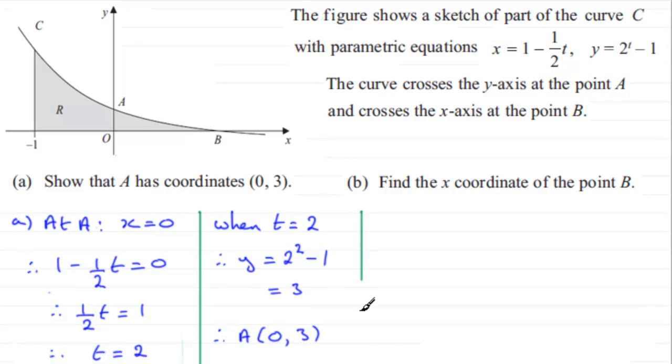Now for part B we've got to find the x-coordinate of the point B. So we do this when y is 0 so at B we know that y equals 0.